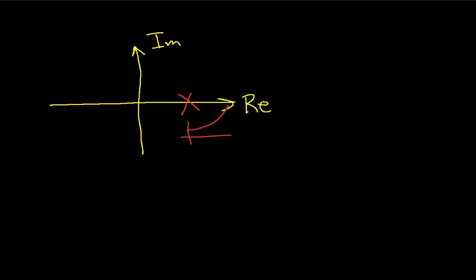Complex poles also correspond to exponentially increasing sinusoids. So, basically anything that is to the right of the imaginary axis, this area that I'm shading in, corresponds to a time signal that increases without bound.